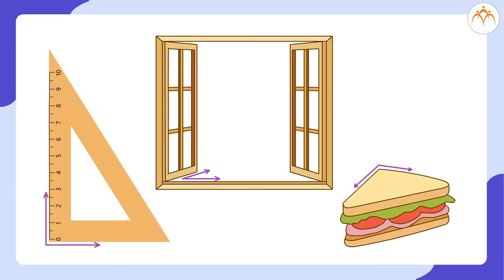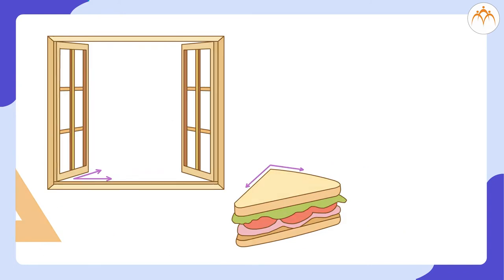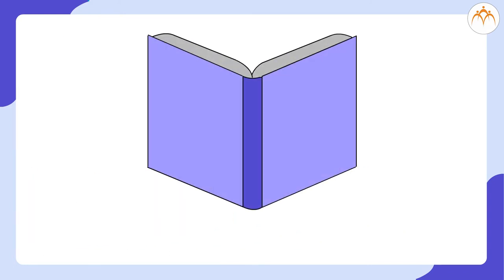Apart from above objects, do you see such angles around you every day? Children, this is an open book. Can you see this? This is a line. This is another line. They meet each other at this point in the corner.